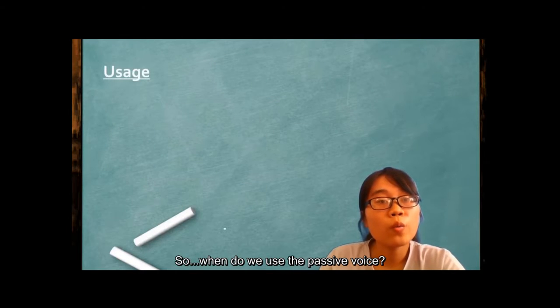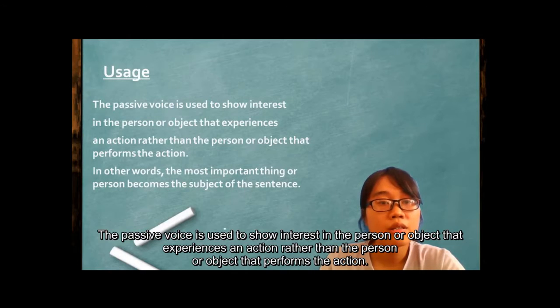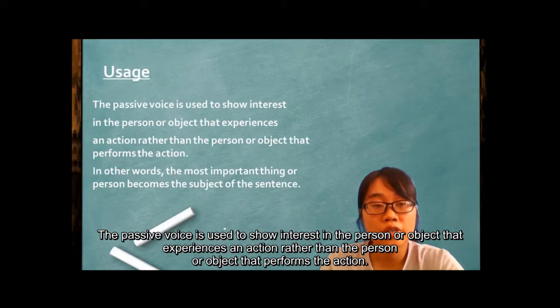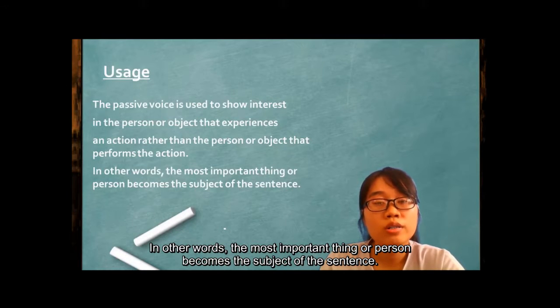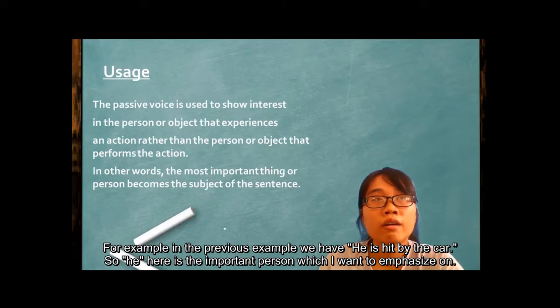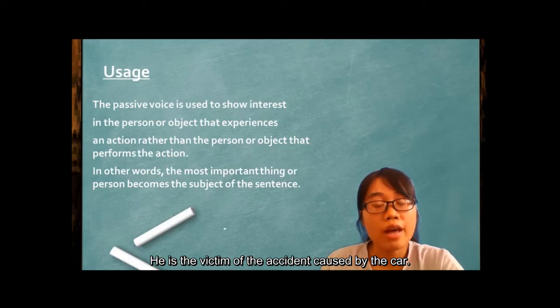So when do we use the passive voice? The passive voice is used to show interest in the person or object that experiences an action rather than the person or object that performs the action. In other words, the most important thing or person becomes the subject of the sentence. For example, in the previous example, he is hit by the car. So here is the important person, which I want to emphasize, that he is the victim of the accident caused by the car.